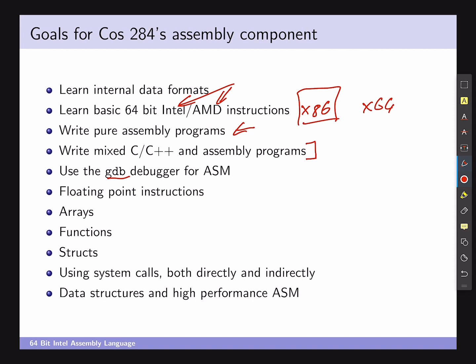Some things we're going to focus on in assembler include floating point instructions. There are kind of two ways of doing floating point — the old approach and the more modern vectorized approach. We're going to focus on the latter, but this is quite late in the book so we'll get there a bit later. We're also going to work with arrays and array-based instructions in assembler, which are quite useful.